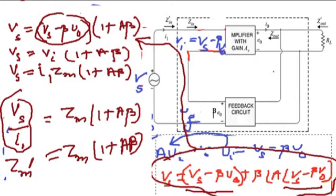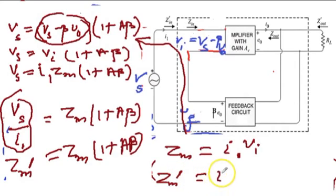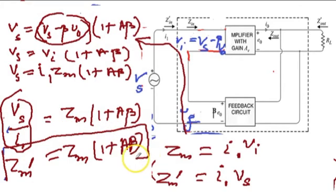Now Zin dash is the impedance of the whole circuit and it is coming greater than Zin. It is very much improved because Zin dash is Zin times bracket 1 plus A beta. You know Zin is I1 into Vi and Zin dash is I1 into Vs—this is the difference. So the input impedance is very much improved, 1 plus A beta times.